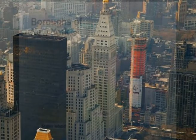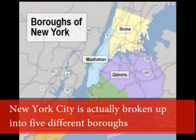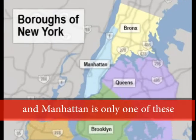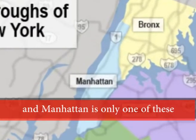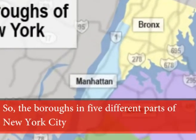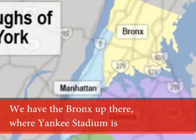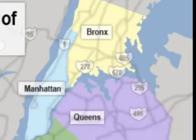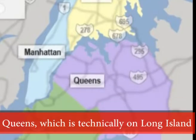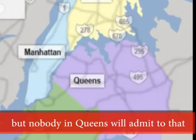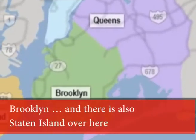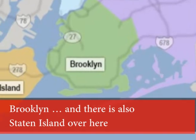New York City is actually broken up into five different boroughs — Manhattan is only one of these. We have the Bronx, where Yankee Stadium is; Queens, which is technically on Long Island but nobody in Queens will admit to that; and Brooklyn.